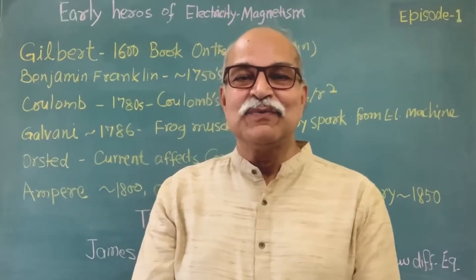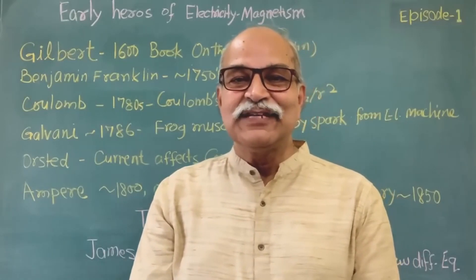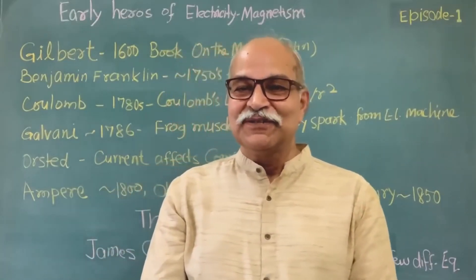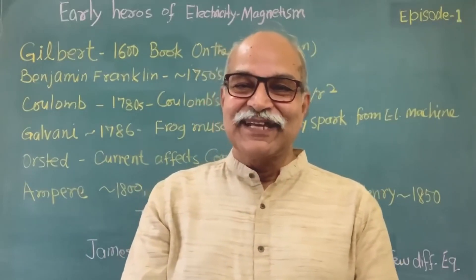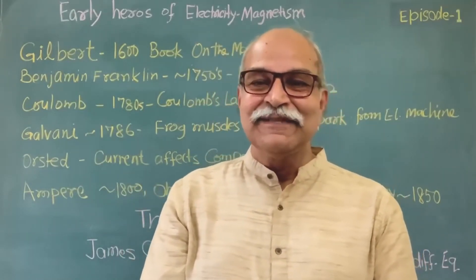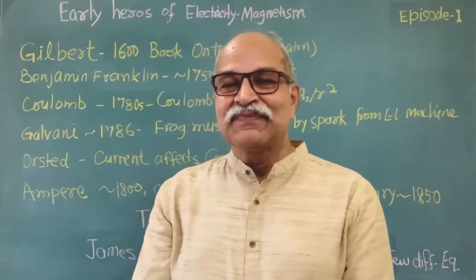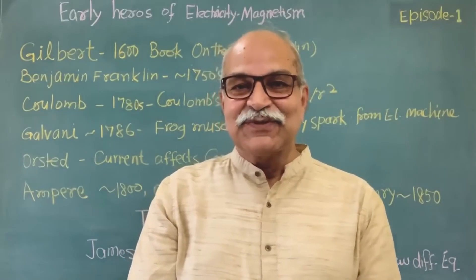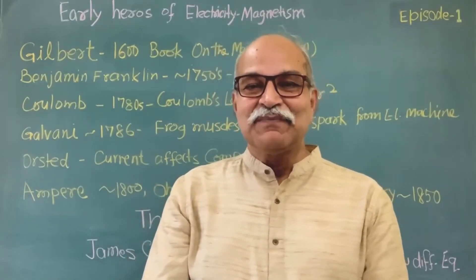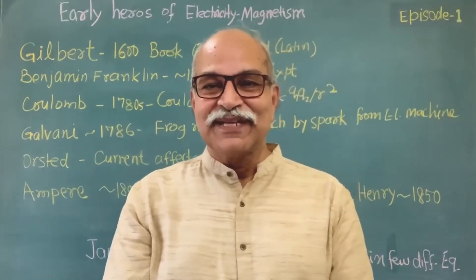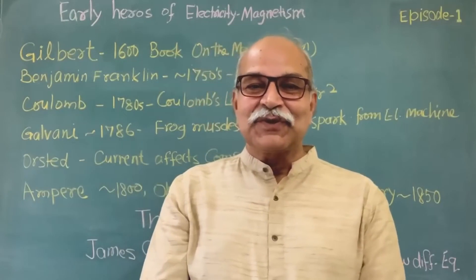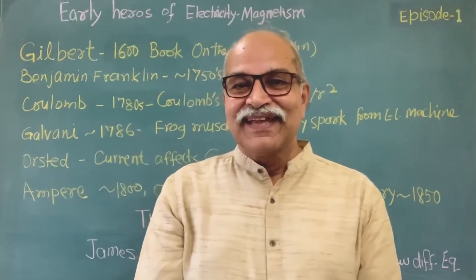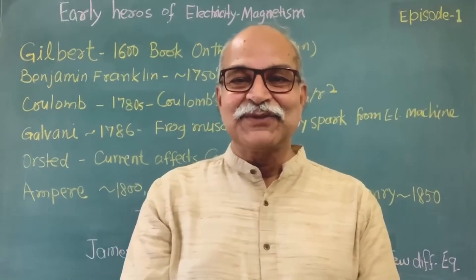The Nobel Prize in Physics 1921 was given to Einstein. It's common knowledge that Einstein had done a lot of work on relativity, Brownian motion, and the photon theory of light. The Nobel committee chose this last part — Einstein's contribution in explaining the photoelectric effect. We are completing 100 years of that Nobel Prize, and this is a good time to talk about what this photoelectric effect is that earned Einstein the prize, superseding even relativity.